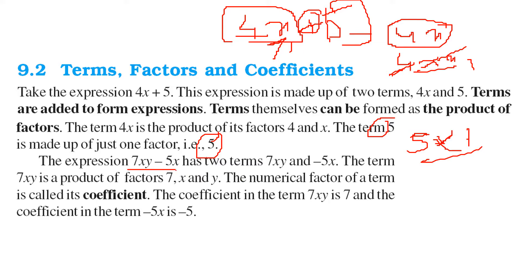This expression 7xy minus 5x has two terms. One is 7xy, the other is minus 5x. And 7xy has, this term has another factors like 7, x and y. These are factors.